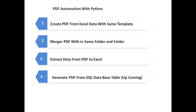This video is the continuation of the Python PDF automation playlist. We have already done the first two videos: creating the PDF from Excel data with the same template, and merging PDFs within the same folder. Today I will demonstrate the third point, which is extracting data from PDF to Excel.